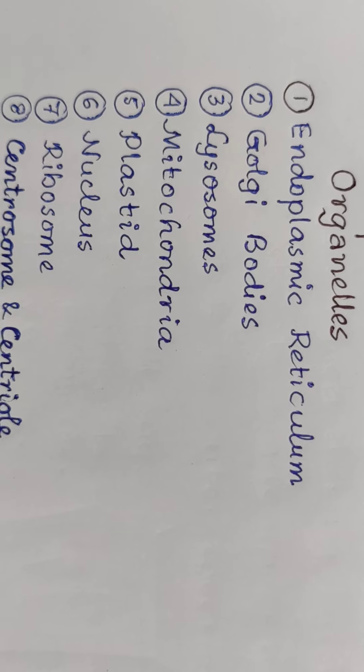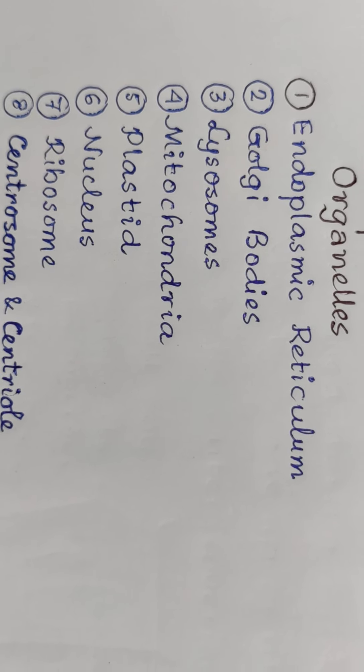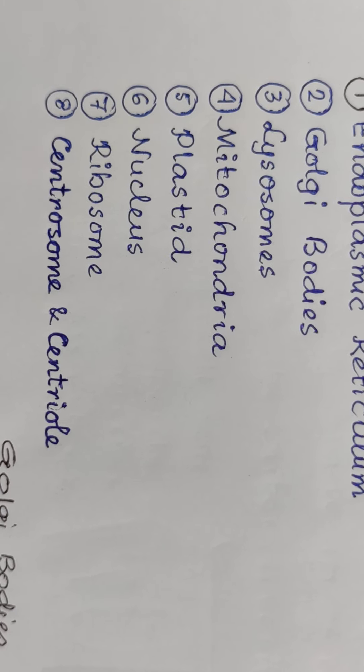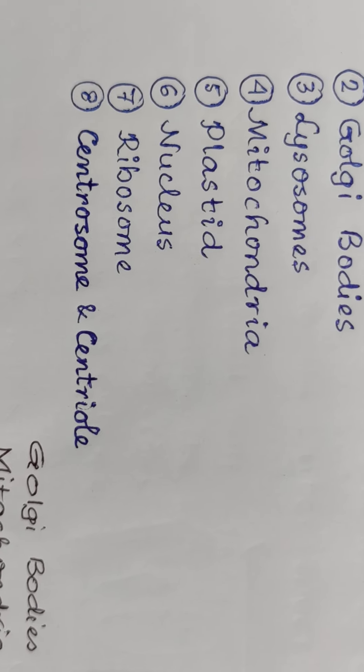Number one: endoplasmic reticulum. Number two: Golgi bodies. Number three: lysosomes. Number four: mitochondria.